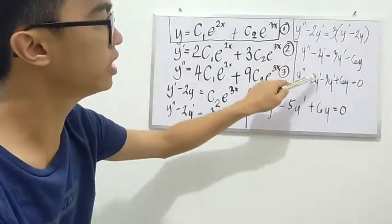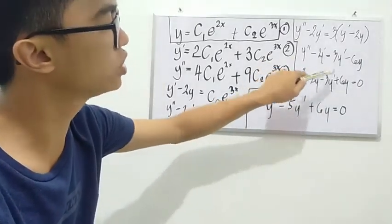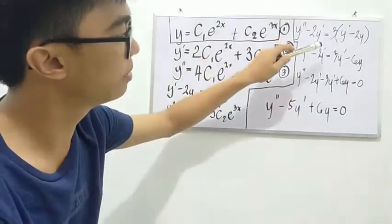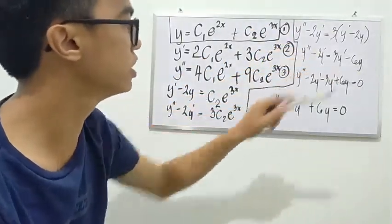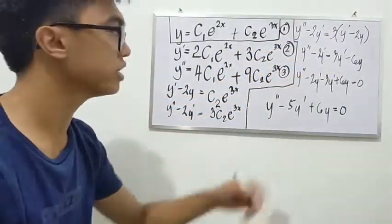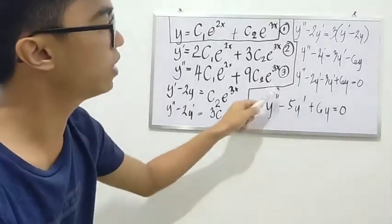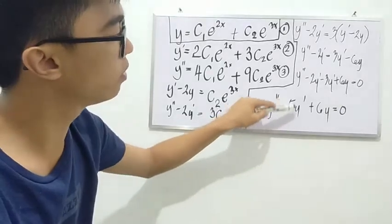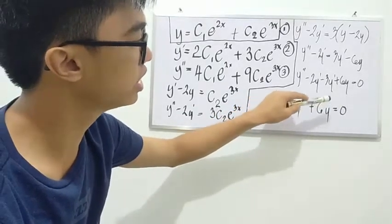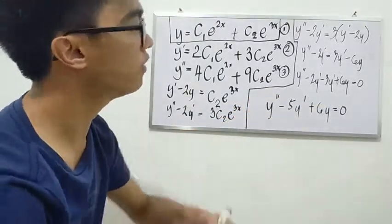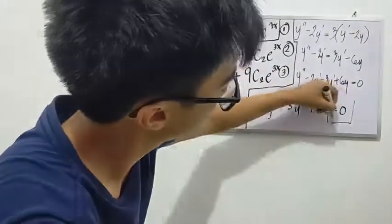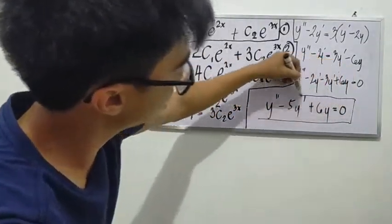y double prime minus 2y prime minus 3y prime plus 6y equals 0. You have to simplify the equation. So y double prime minus 5y prime plus 6y equals 0. So our final answer to this equation is this.